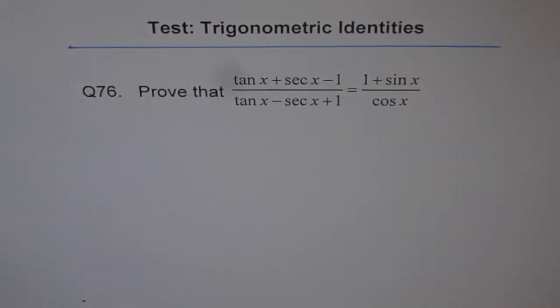This is question 76 on trigonometric identities, part of your test. Copy the question and try to solve it. Once you've done the solution, you can look for my suggestions. The question is: prove that (tan x + sec x - 1) / (tan x - sec x + 1) equals (1 + sin x) / cos x.